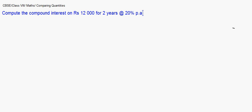The first question I'm taking up: compute the compound interest on rupees 12,000 for two years at a rate of 20 percent per annum. We have to calculate the compound interest for two years — the interest is compounded half yearly, or as you may also come across the term, semi-annually.